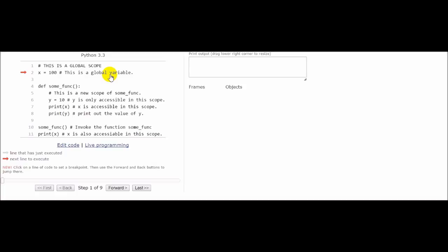It means that any block of code can read x's value. When you declare a function like some_func in this case, it will create a smaller scope when the function some_func is invoked, as on line 10. As you can see, we declare a local variable y in this function and assign a value of 10 to it.